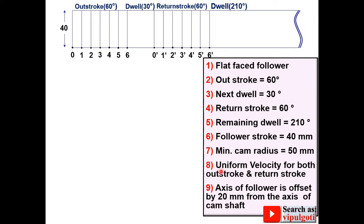Now uniform velocity is given to you for both outstroke and return stroke. So you have to draw the straight incline line for the outstroke. Keep in mind that for the dwell it is always horizontal. Then for the return stroke it is straight incline line and for the remaining dwell it must be horizontal line.